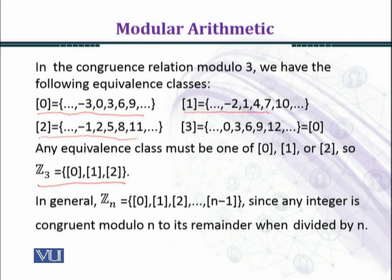In general, we can extend this idea. Integers modulo n, z n equal to 0 class, 1 class, 2 class and so on, n minus 1 class. Because there are n classes in integers modulo n.